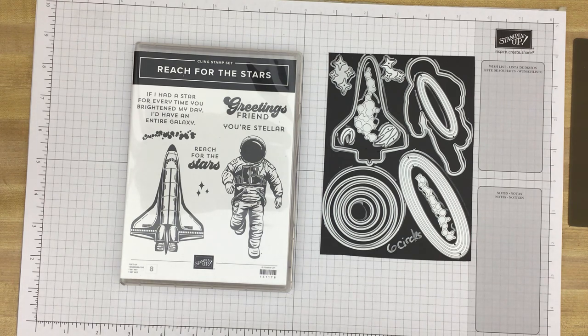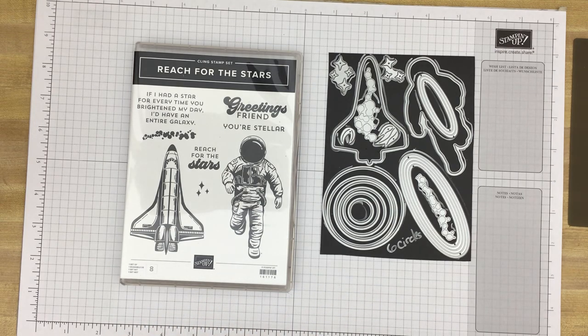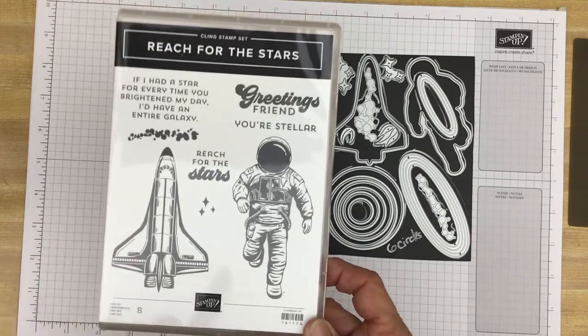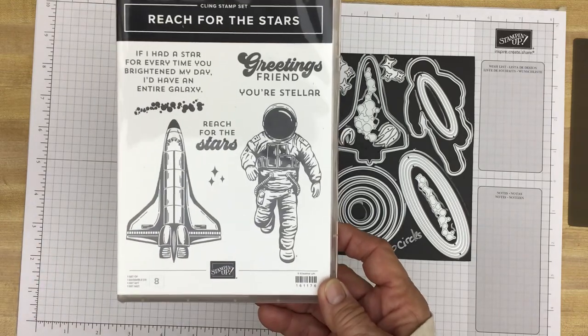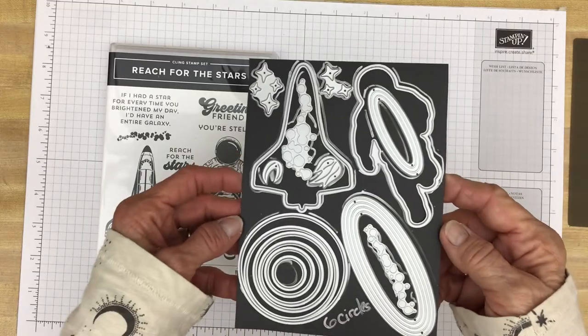Today we're going to take an in-detail look at the Stargazing Suite from Stampin' Up. The Reach for the Stars bundle is included in this suite. This includes the Reach for the Stars stamp set and the Reach for the Stars dies.